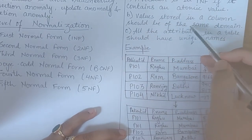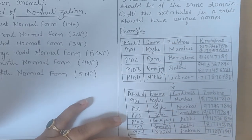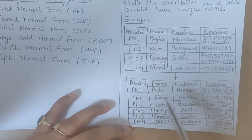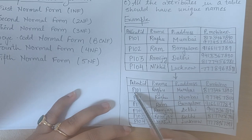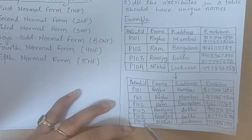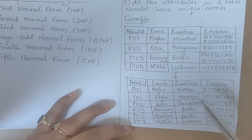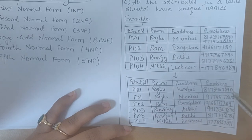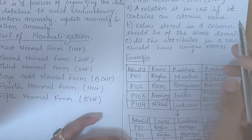Now the table is modified. Let's check the second rule: values stored in a column should be of the same domain. Patient ID contains both alphabet and integer characters but all values are of the same type — no problem. Patient name: all names are of string type — no problem. Patient address: all values are of string type — same domain. Mobile number: all numbers are integer type — no problem. So the second rule is also satisfied.